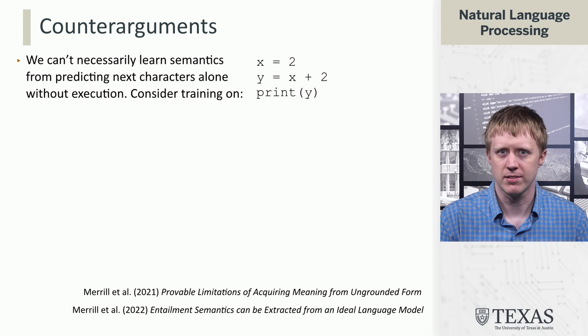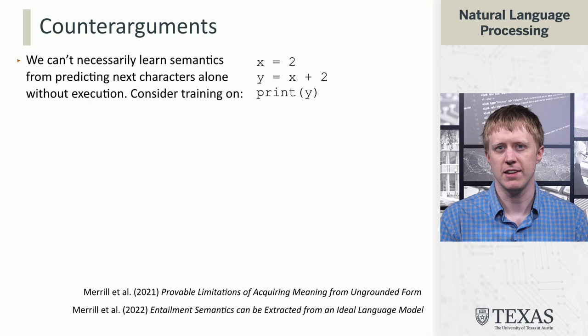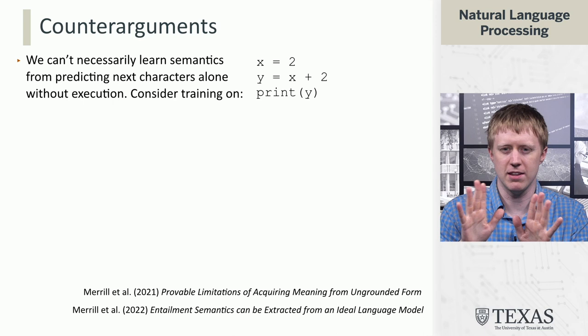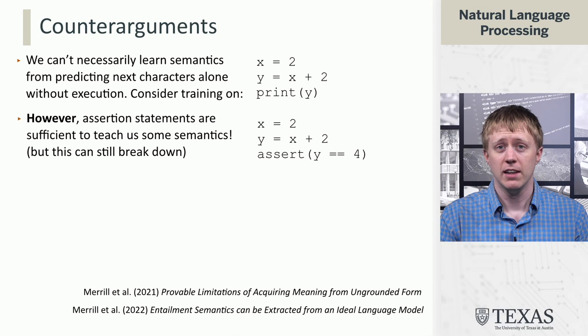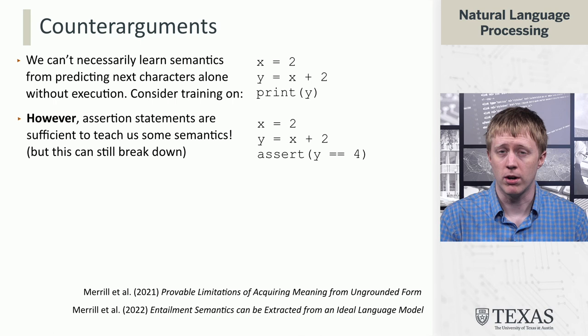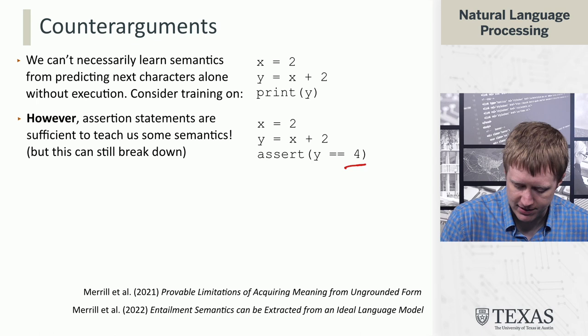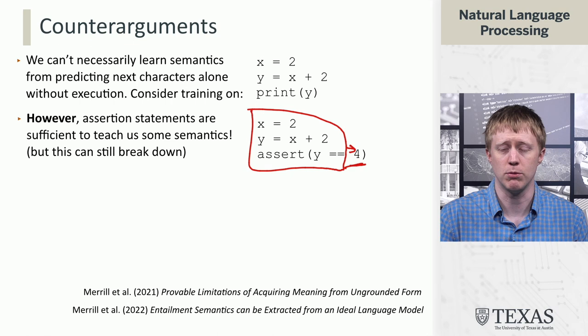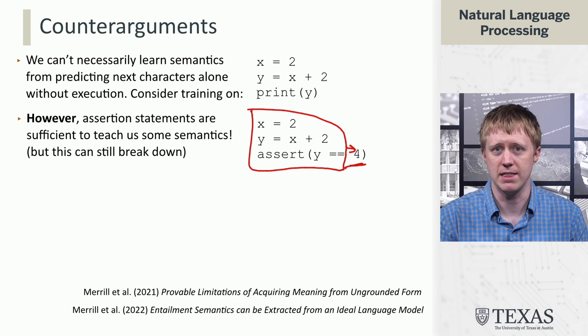There have been a few counter-arguments. One is that in the context of code, it's hard to learn meaning from just language modeling over a string like 'print y' — we have no idea what the value of y is going to be. But if we're training our language model over code that has assert statements, like 'assert y == 4,' then in order to predict the next token — in this case, four — and maximize the likelihood of the right thing, the model has to actually learn that two plus two equals four.